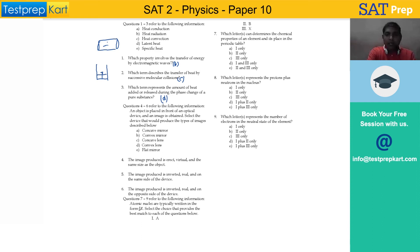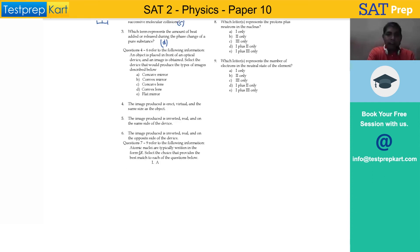Now, for question number 4 to 6, five options are given. There are different types of mirrors and lenses and we need to give answers for certain questions. Question number 4 is: The image produced is erect, virtual and of same size as the object.